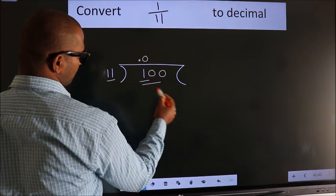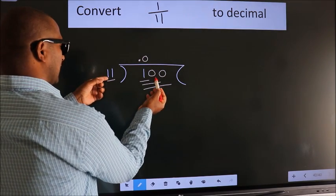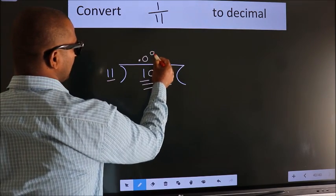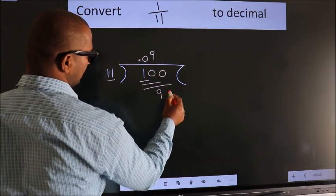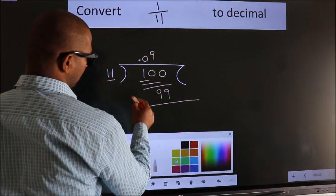A number close to 100 in 11 table is 11 times 9, which is 99. Now we subtract and we get 1.